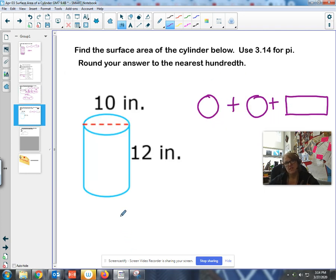Just because I want to see, I want you to see this one. All right, here's a cylinder. Find the surface area. Use 3.14 for pi. Round to the hundredths place.